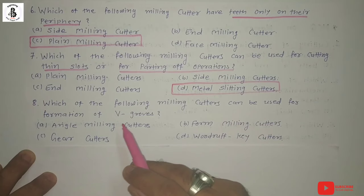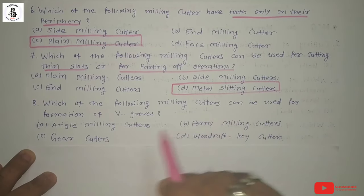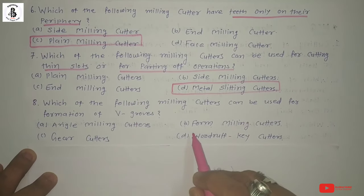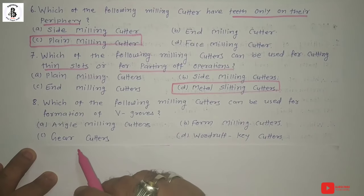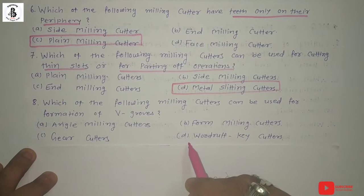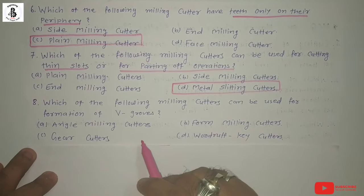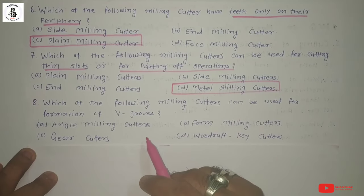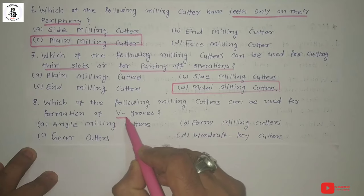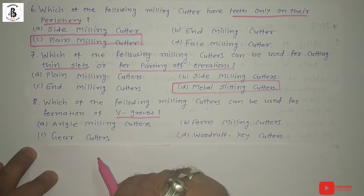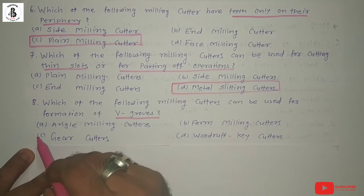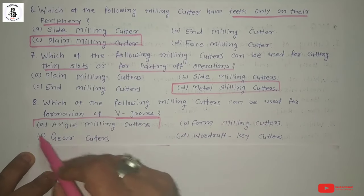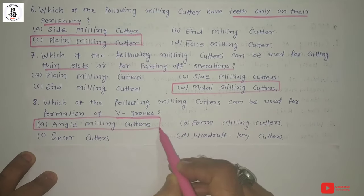Next: Which of the following milling cutters can be used for the formation of V-grooves? Option A: angle milling cutter, option B: form milling cutter, option C: gear cutters, option D: Woodruff key cutters. For the formation of V-grooves, you can use angular milling cutters. So the right answer is option A: angle milling cutter.